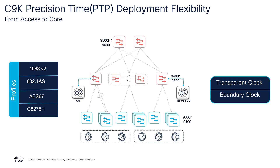Catalyst 9000 switches support the 1588v2 profile, which is the default profile, the 802.1AS profile both in standalone and AVB deployments, the AES67 profile, and the G8275.1 profile. Catalyst 9000 switches can act as both transparent and boundary clocks in the PTP domain. This combination of hardware and software features helps with onboarding time-sensitive applications on existing deployments without needing to build a standalone dedicated network.